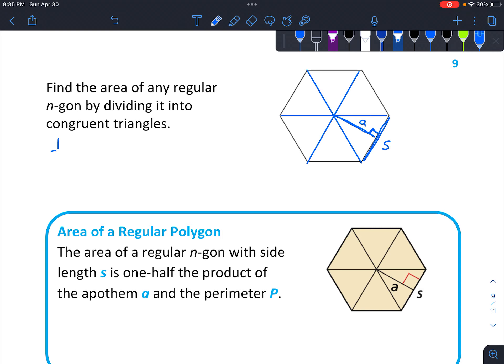However, instead of saying it's the height, we're going to call it A for apothem. So we've got one-half times S times A. And then how many triangles do we have? So in this case we have six.